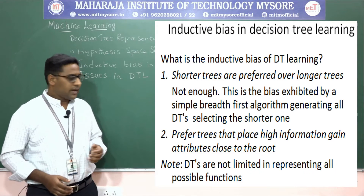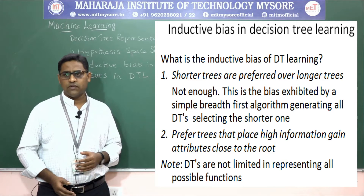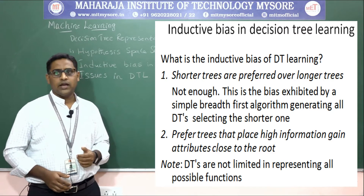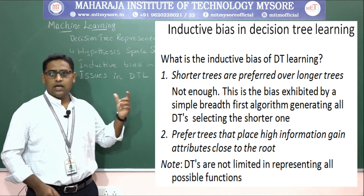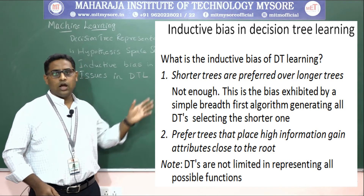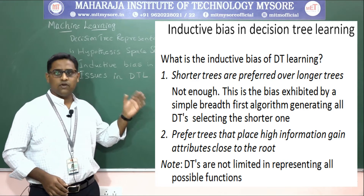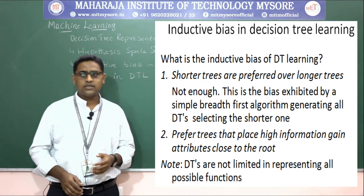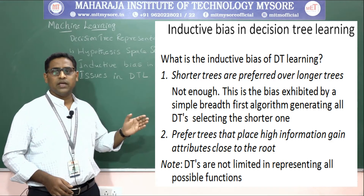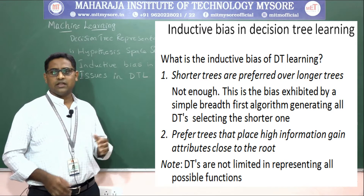A key question is: what is the inductive bias of decision tree learning? There are two answers. First, it prefers shorter trees over longer trees. This bias is exhibited by a simpler breadth-first search algorithm that generates all decision trees and selects the shorter ones.